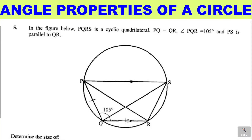Angle properties of a circle. In the figure below, PQRS is a cyclic quadrilateral. PQ is equal to QR, angle PQR is equal to 105 degrees, and PS is parallel to QR. So there is the diagram.